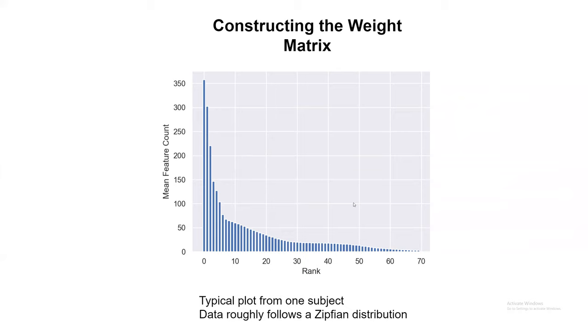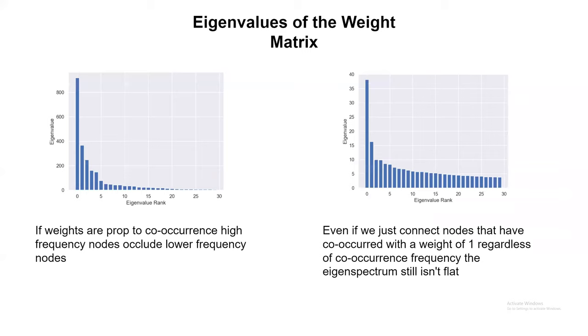If you construct the weight matrix such that you simply add up the number of times two cues appear together and look at the eigenspectrum of the matrix that gets created, you see it's highly skewed. The primary eigenvector has a much larger eigenvalue than the rest. That's a problem because the system is going to be dominated by that primary eigenvector. One way we can try to mitigate that is instead of scaling the weights by the number of times two features are seen together, we can just connect them if they're seen together. You can see that helps somewhat, but that primary eigenvector is still significantly bigger than the rest.